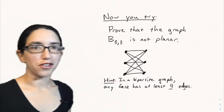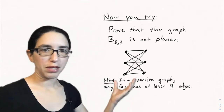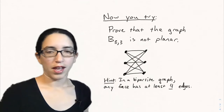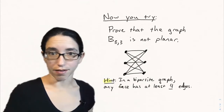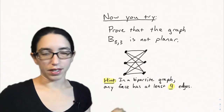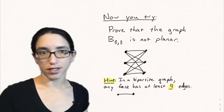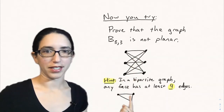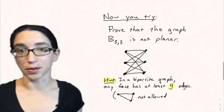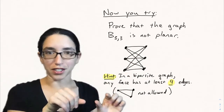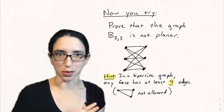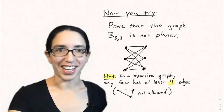Now you try: prove that the graph K_{3,3} is not planar. K_{3,3} is the complete bipartite graph with three vertices on each side and all possible edges between them. This proof will go similarly to the one for K5, except you need a stronger fact: in a bipartite graph, any face in a planar embedding has at least four edges, because three-cycles are impossible in a bipartite graph. Using that, faces have at least four edges around them, which will help the contradiction work out. That's all for today — see you next time.